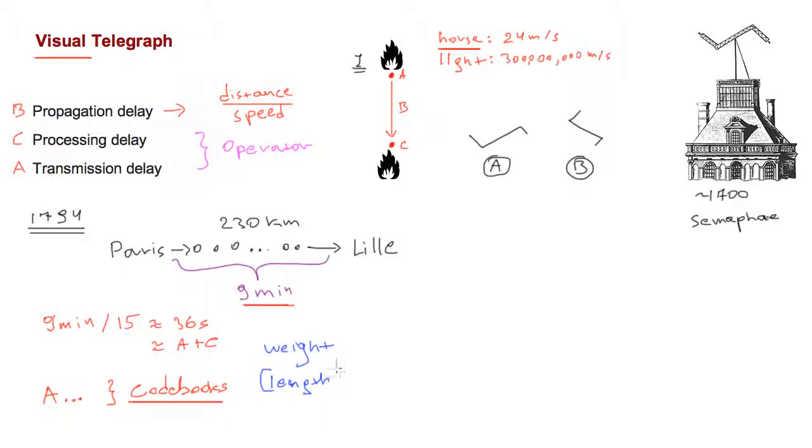And because the visual telegraph delivered messages so much faster because of the speed of light, it actually became very, very popular in Europe in the 1800s. But there are also a couple of problems with it. First of all, it is actually very expensive to operate. Because you need many different stations along the way. So we have 15 stations here. And each station would need people to operate. So in fact, because of this, it was effectively limited to military and government use.